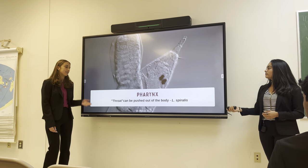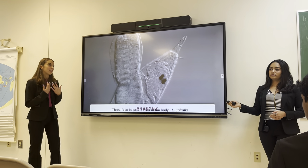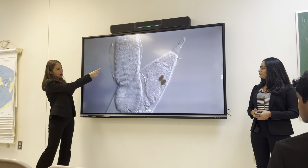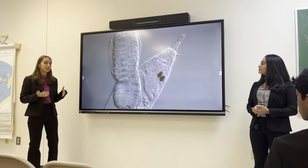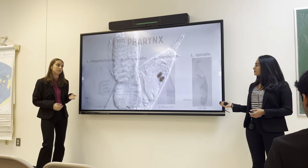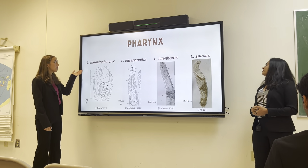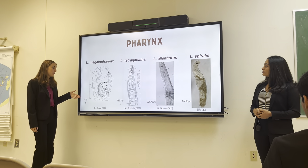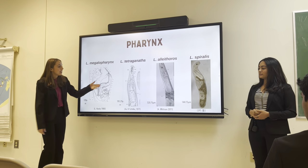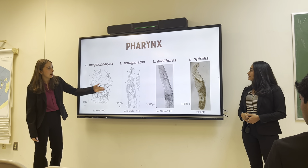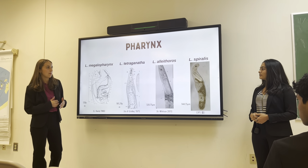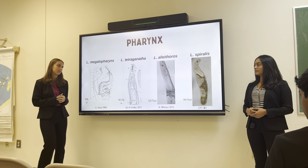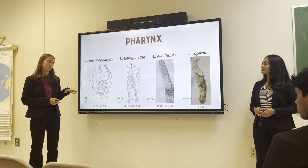The second structure we looked at is the pharynx, which is kind of like the throat, except this can actually be pushed out of the body to reach the prey caught on the proboscis hooks. This is a very muscular region, and it differs in size between the different species. Megalophorus has a very large pharynx at 120 micrometers, large compared to the size of the body. Tetriganthus is a little bit shorter, and Allynchoros and Spiralis are similar compared to their body size, with Spiralis being 144 micrometers, which is not very large relative to body size.